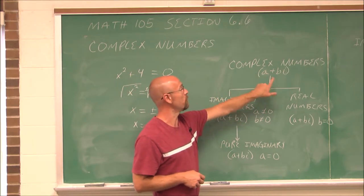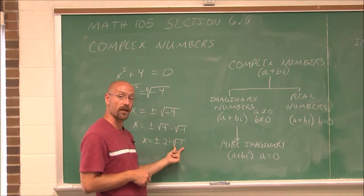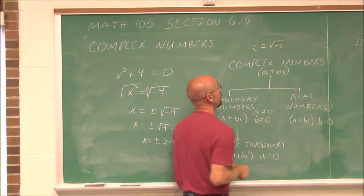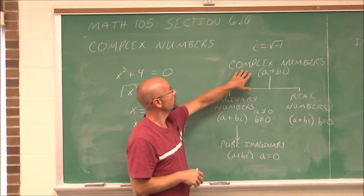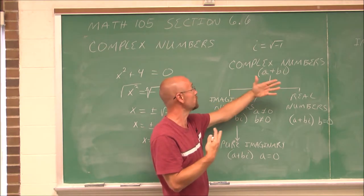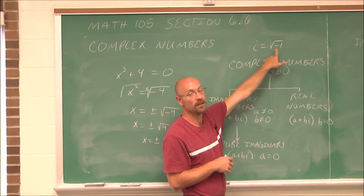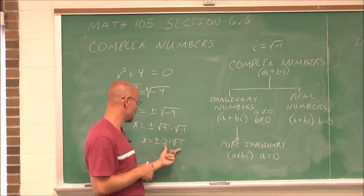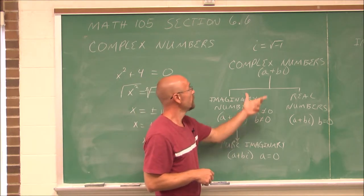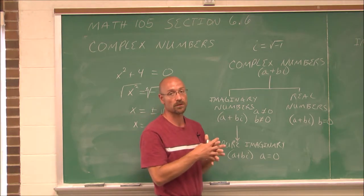Complex numbers in standard form are written as a plus bi, where i is the square root of negative 1. It's just a symbol — a lower case i — that we use to indicate the square root of negative 1. In this form, a is a real number, like 4 or 6 or 2. And b is the coefficient of the square root of negative 1. So the complex number written in standard form is a plus bi, and we can break that down into further categories.